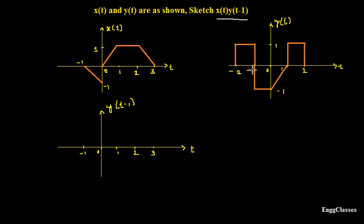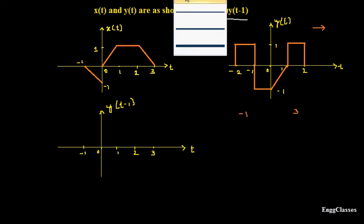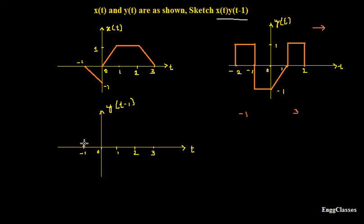The shape of the signal is going to be the same. The only thing is it gets shifted to the right by 1. The limits are minus 2 to plus 2. I will add 1 to these, so that it becomes minus 1 to 3. These will be our new limits — this is where the signal exists. The shape remains the same, so let me sketch the shifted version of that signal.